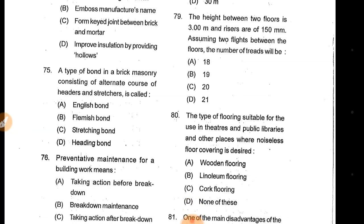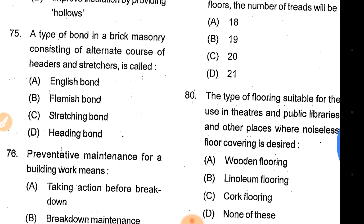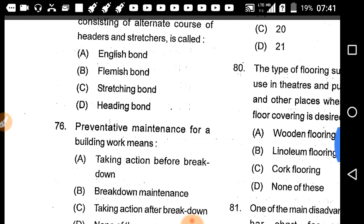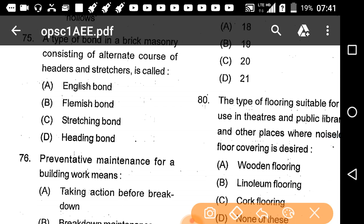Hello, I am back again with Part 5, from question 75 to the last part, question 90. Question number 75: a type of bond in brick masonry consisting of alternate courses of a header and stretcher is called English bond.